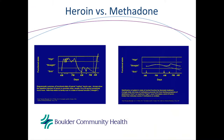This graph demonstrates the experience of someone actively using opiates versus someone stable on a therapeutic dose of methadone. Someone actively using is hardly ever in the normal range — they're either high or in withdrawal and not feeling well. Someone stable on methadone never leaves that normal section. The dotted line on the right shows that if someone were to taper off their medication improperly, they'd go back into that sick state.